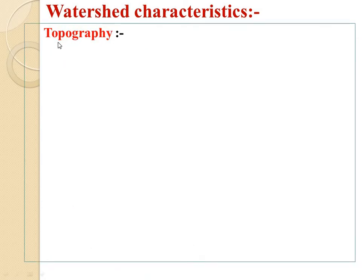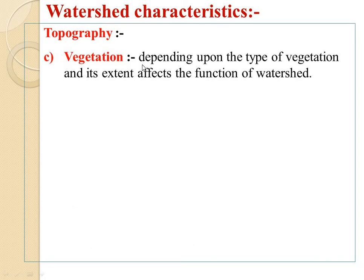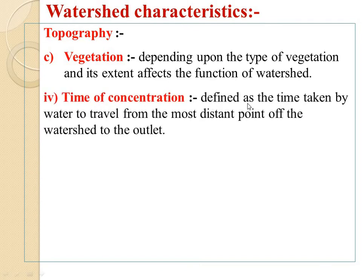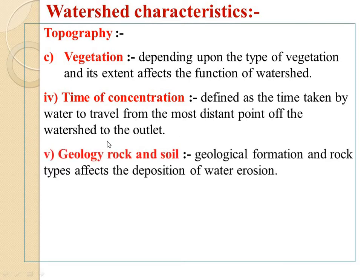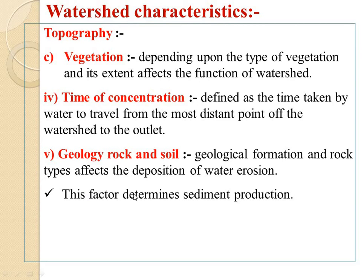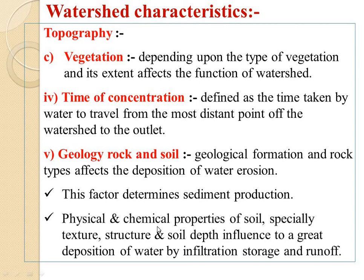Continuing with topography, the next characteristic is vegetation. Depending upon the type of vegetation and its extent, it affects the function of the watershed. Time of concentration is defined as the time taken by water to travel from the most distant point of the watershed to the outlet. Regarding geology, rock and soil: geological formation and rock types affect the deposition of water and erosion, and this factor determines sediment production. Physical and chemical properties of soil, especially texture, structure, and soil depth, influence the deposition of water by infiltration, storage, and runoff.